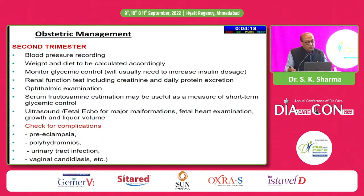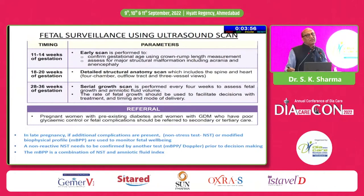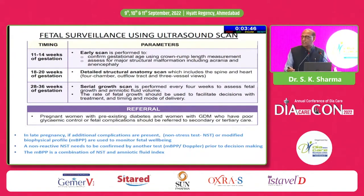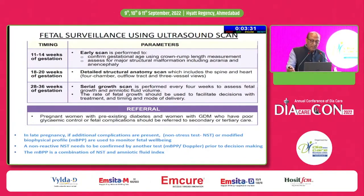In the second trimester, in addition to those assessments, we check for pre-eclampsia, polyhydramnios, and urinary tract infection. In the third trimester, fetal echocardiography is done to look for congenital malformations. Fetal surveillance is very important: an early scan at 11 to 14 weeks, a detailed structural anatomical scan at 18 to 20 weeks, and serial growth scans from 28 to 36 weeks. In late pregnancy, if additional complications are present, non-stress testing or modified biophysical profile are required.